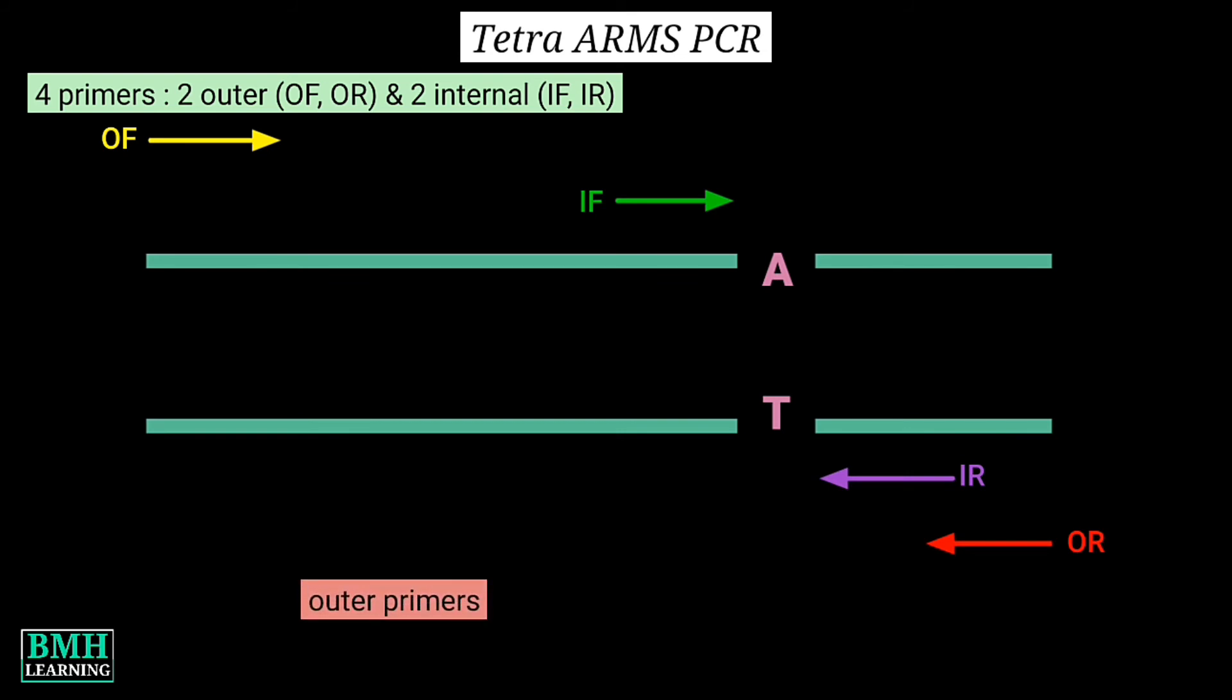Outer set of primers, that is outer forward and outer reverse. This combination of primers generate a large fragment in all the genotypes. So this way it acts as an internal control of PCR, that is positive control.